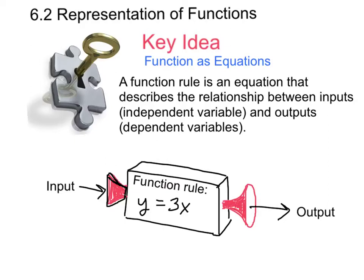Let's look at our key concept. A function rule, or just a function, is an equation that describes the relationship between your inputs, which is called your independent variable, and your outputs, which is called your dependent variables.